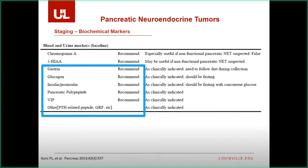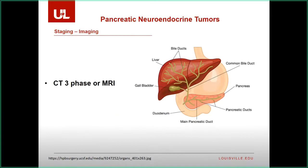Both chromogranin A and urinary 5-HIAA levels correlate with tumor burden. The top line shows number of metastatic liver lesions and their chromogranin A levels. The bottom panel shows people with liver mets versus without — those with liver metastases were much more likely to have elevated chromogranin A and 5-HIAA. We use these to assess response to systemic treatment and to monitor for recurrence after surgery. Caveat: chromogranin A can be elevated with other things, but you typically don't get into the thousands unless there's actually a tumor.